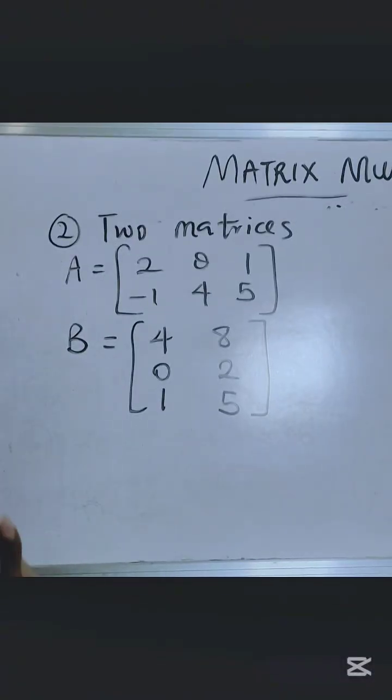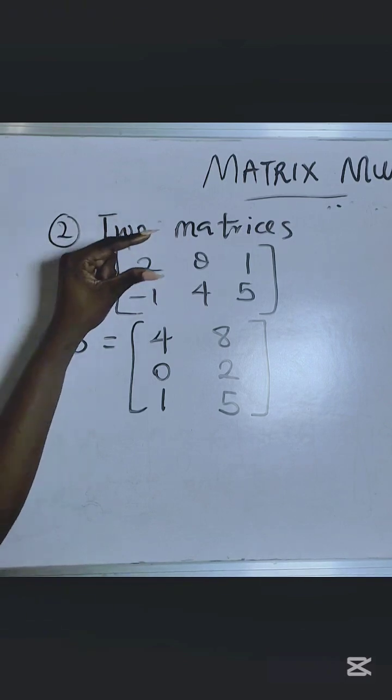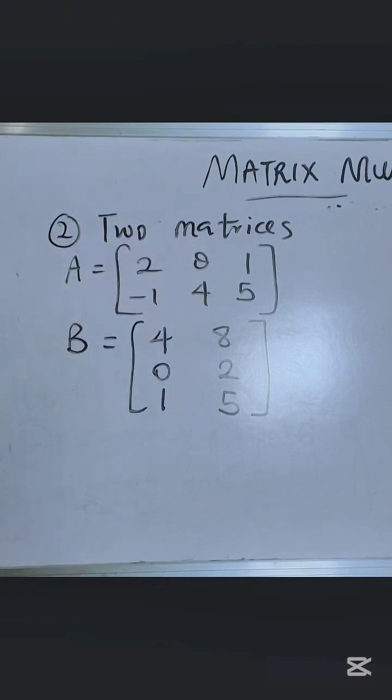Well, in the case of two matrices, the rule says that the number of columns in the first matrix has to be the same as the number of rows in the second matrix. That is the only way you can multiply two matrices.